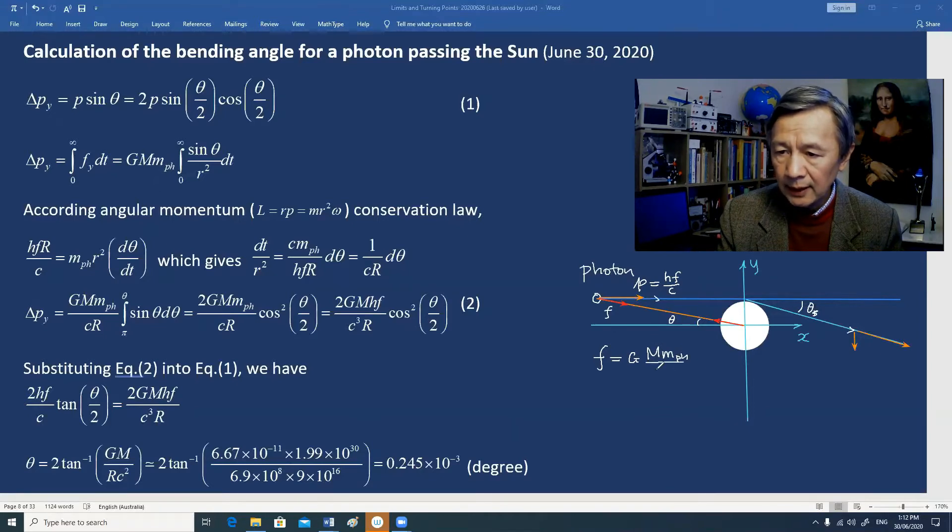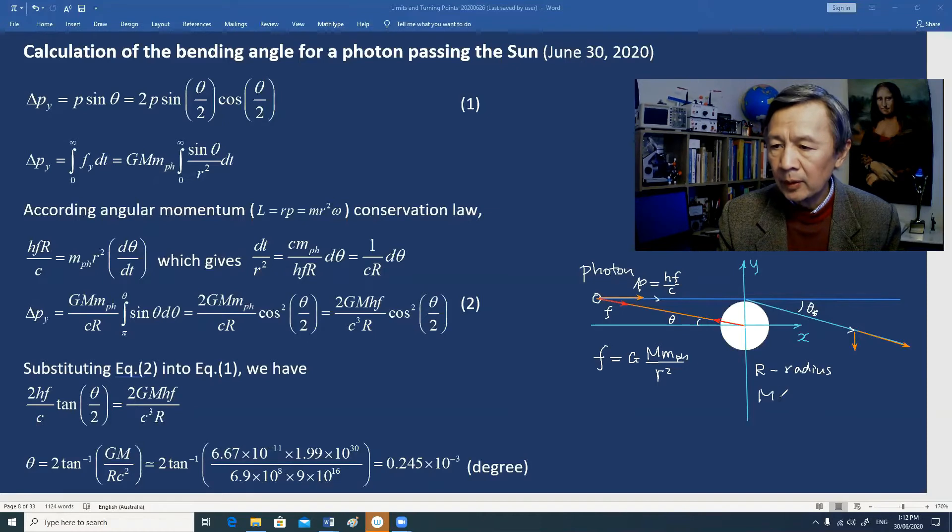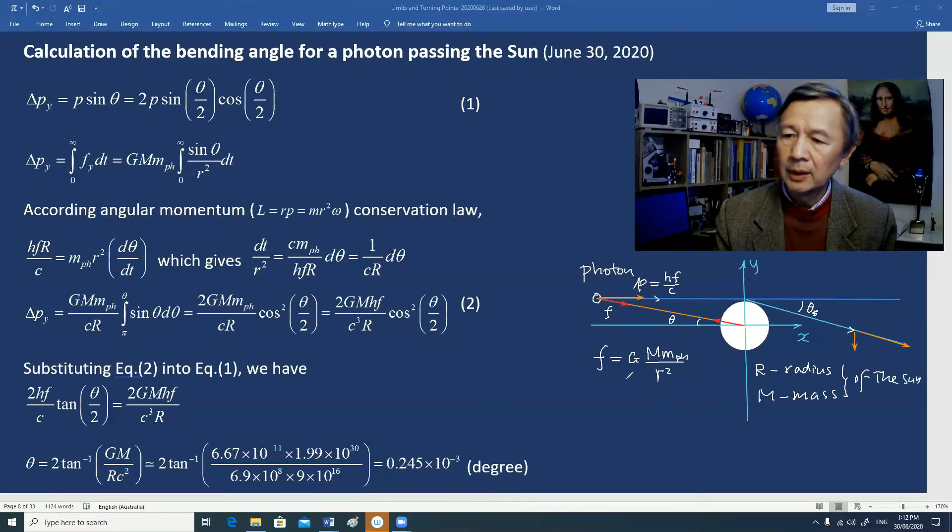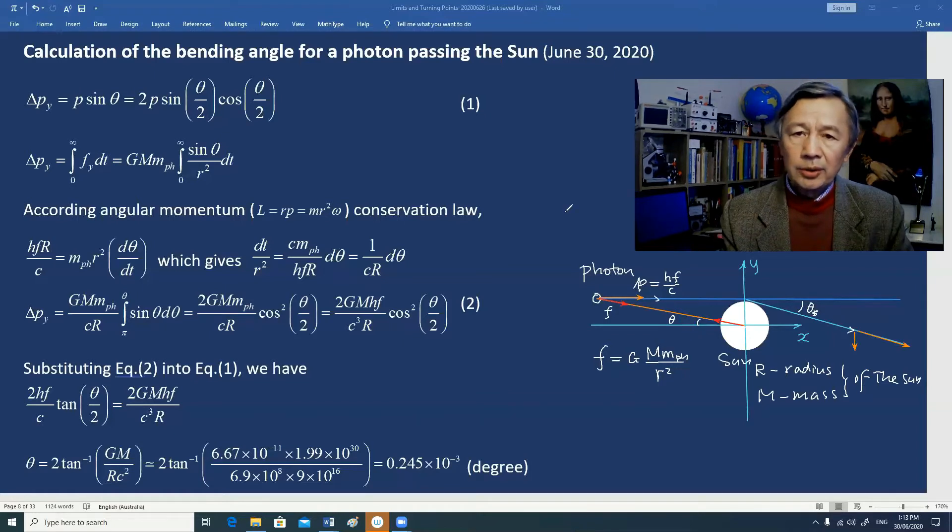According to Newton's law, G is the gravitational constant, M is the mass of the Sun, this is the mass of the photon, and R is the distance between the two objects.